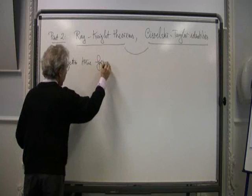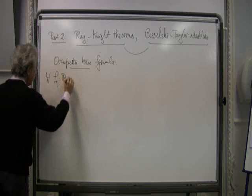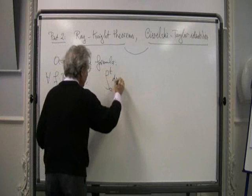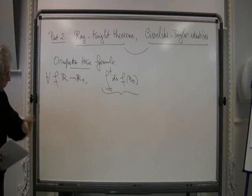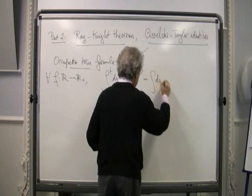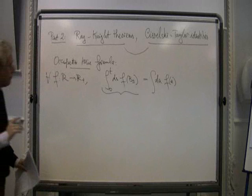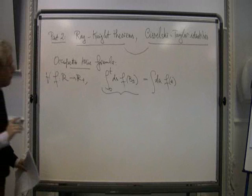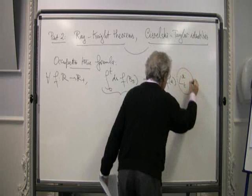I write it for every function again. For every F from R into R plus Borel, the integral from 0 to t of ds f(Bs). That is this quantity. If f is the indicator of gamma, this is the time spent in gamma by Brownian motion up to time t. This quantity you can write as an integral dA f(A), and now you have a density of occupation which is also called the Brownian local times.